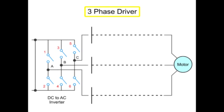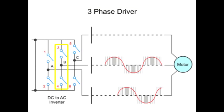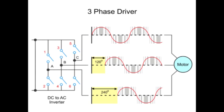In a three-phase driver, the sine waves produced by each pair of inverter switches are 120 degrees out of phase to ensure efficient operation of the motor.